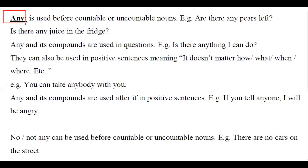'Any' is used before countable or uncountable nouns. We can say 'Are there any pears left?' or 'Is there any juice in the fridge?' 'Any' and its compounds are used in questions — for example, 'Is there anything I can do?' They can also be used in positive sentences meaning 'it doesn't matter who, how, where, etc.' — for example, 'You can take anybody with you.'